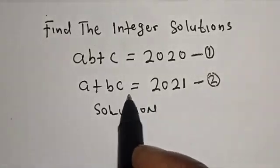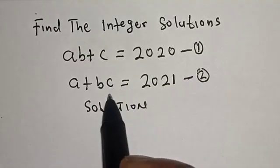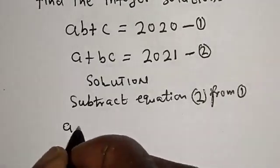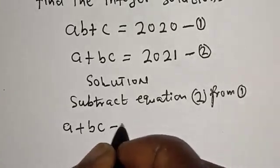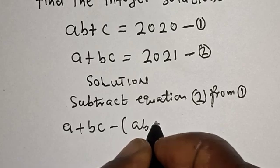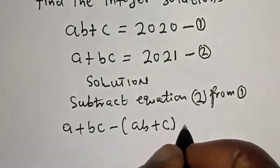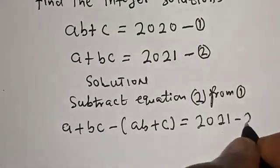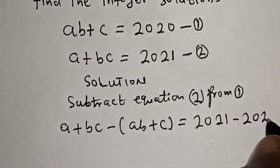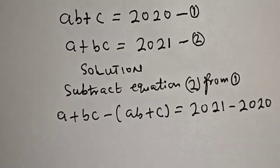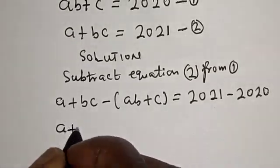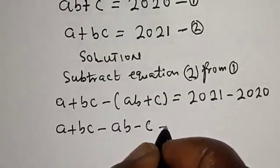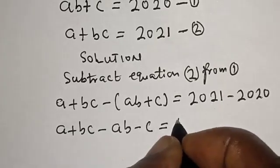Now, from equation 1 and 2, let's subtract equation 2 from equation 1. Then: (A + B)C minus A(B + C) is equal to 2021 minus 2020. This gives us A·C + B·C minus A·B minus A·C is equal to 1.